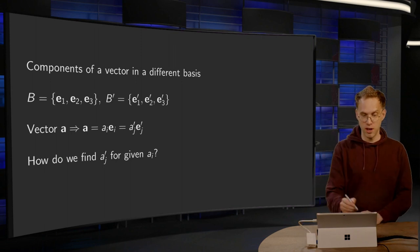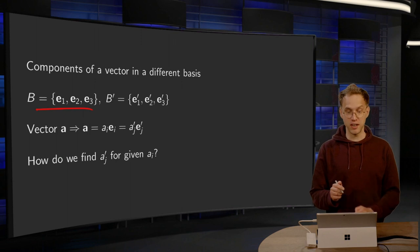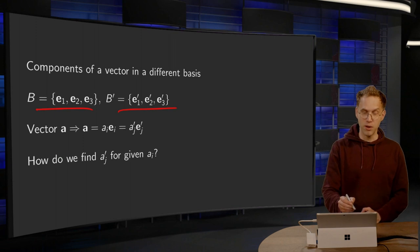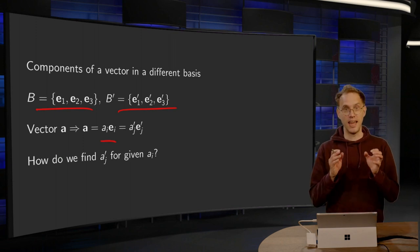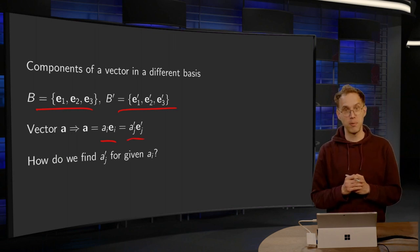So what's the situation? We have an old basis B, which is often the standard basis, and some new basis B'. Then we know that we can express a vector A in the old basis with AI, and in the new basis with AJ'.